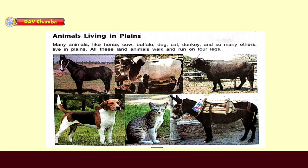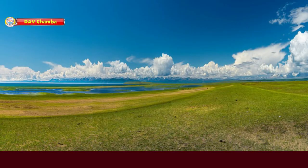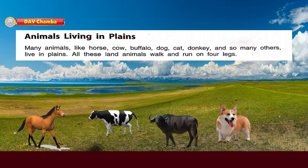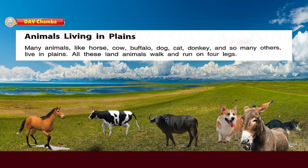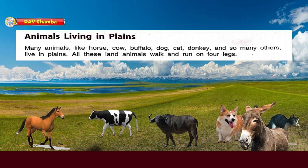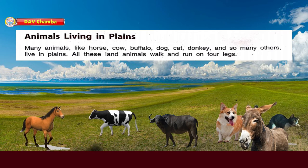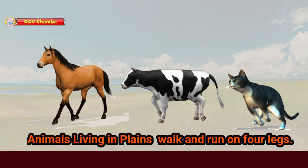Let us see animals living in plains. Many animals like horse, cow, buffalo, dog, cat, donkey, and so many others live in plains. All these land animals walk and run on four legs.